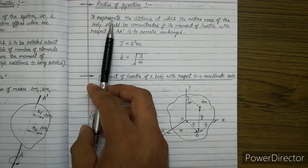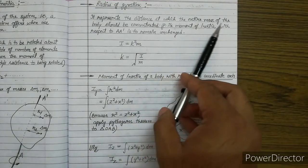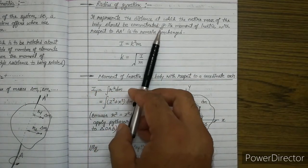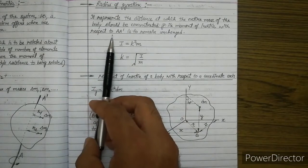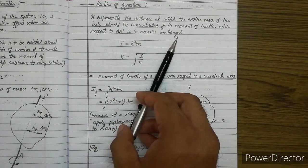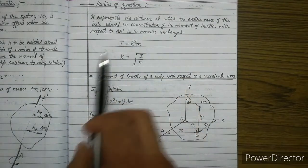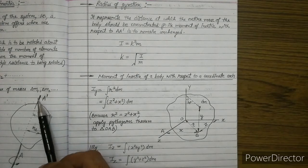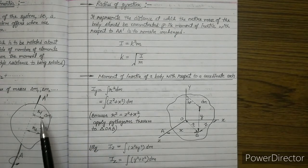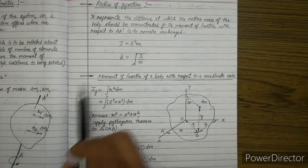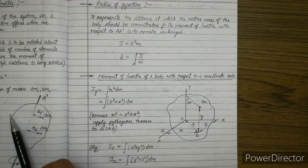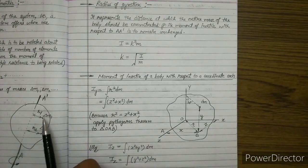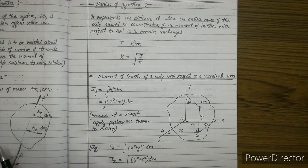The definition states: it represents the distance at which the entire mass of the body should be concentrated, if its moment of inertia with respect to axis A-A' is to remain unchanged. To understand this, suppose we have a rigid body that we want to rotate about a particular axis called A-A'. The mass of the rigid body is m, and we have divided it into n number of small masses labeled delta m1, delta m2, up to delta mn, with distances from the axis of rotation given as r1, r2, up to rn.